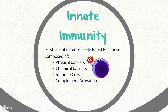The innate immune system is known as the body's first line of defense. This means that it provides an immediate response to eliminate foreign pathogens before they can harm our body. Not all foreign pathogens are the same, which is why the innate immune system is comprised of many different components that react differently to pathogens. The innate immune system consists of physical barriers, chemical barriers, and biological cells that can help prevent the development of disease by immediately eliminating the pathogen from our bodies.